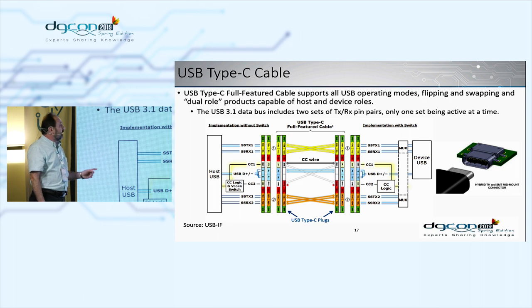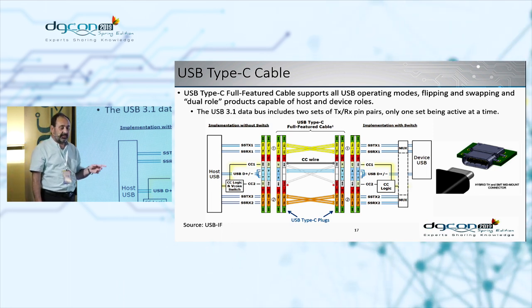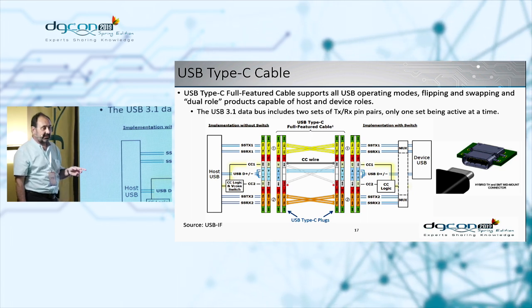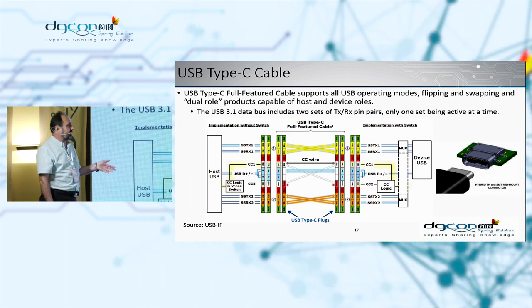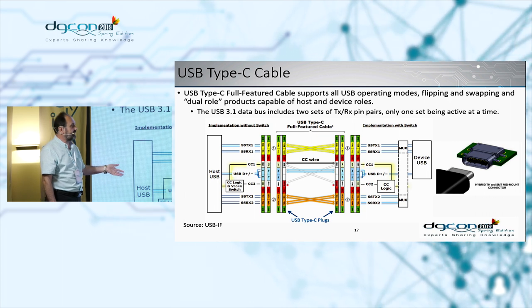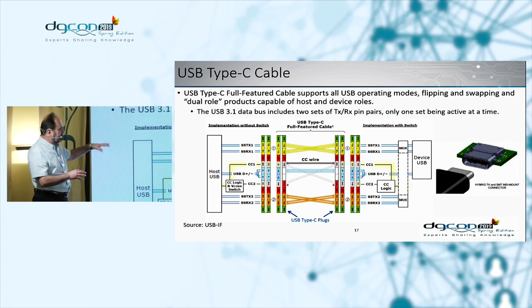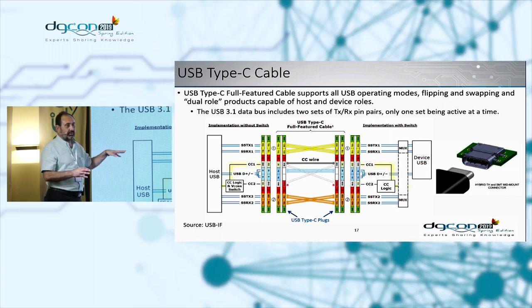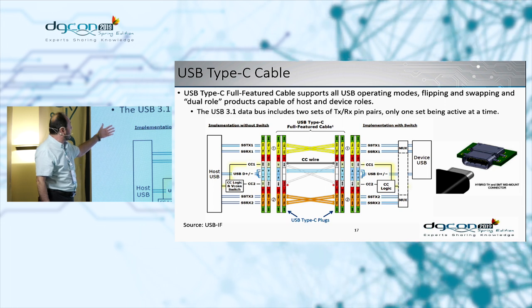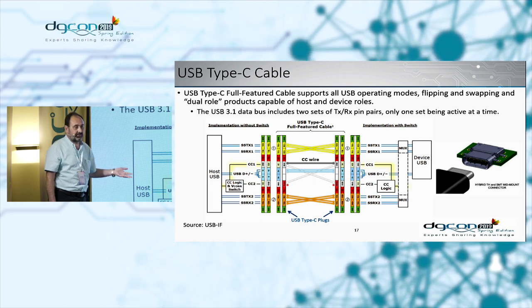An important development is the USB Type-C cable specification, developed alongside the 3.1 specification. From a signal integrity perspective, this cable contains two pairs of transmitters and receivers supporting Gen 1 and Gen 2 signaling, and control signals allow for flipping and swapping of the cable. When analyzing a USB Type-C cable, we analyze it either for Gen 1 or Gen 2.